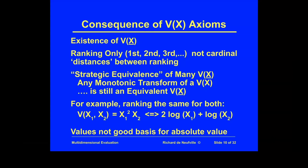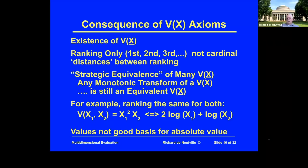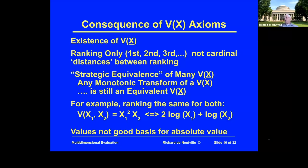Stuart has a question: what is a monotonic transform? A monotonic transform is something like taking a log, multiplying everything by three, dividing it, or taking a square root — something that does not change the ordering associated with it. There's a large class of them.